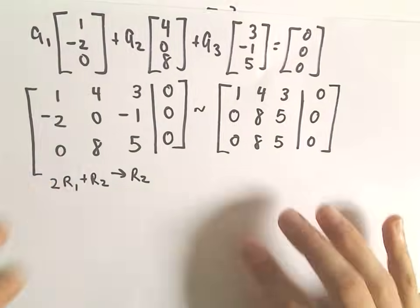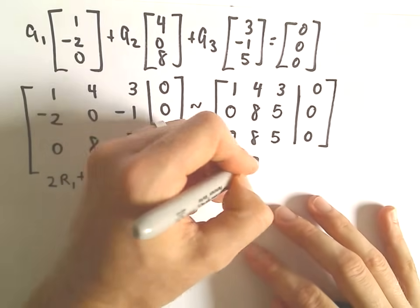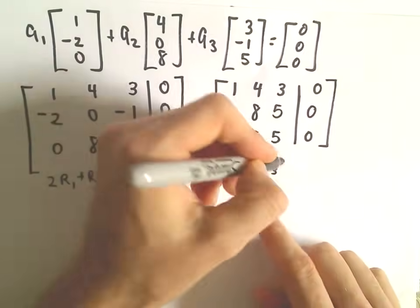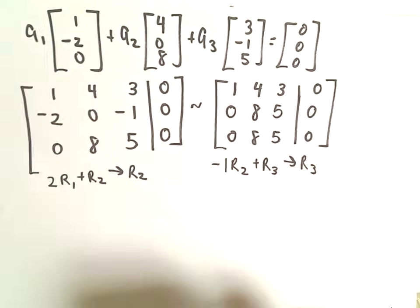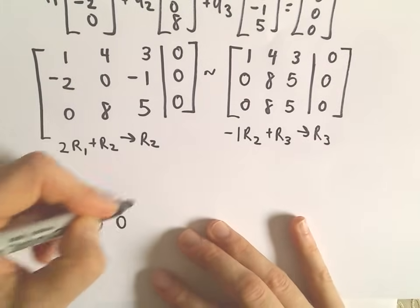Oh, hey, we've got rows that are exactly the same. I'm going to take negative 1, multiply the second row by negative 1, add that to row 3 to get my new row 3. If we do that, that's just going to make the bottom row all into zeros.